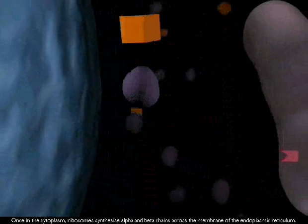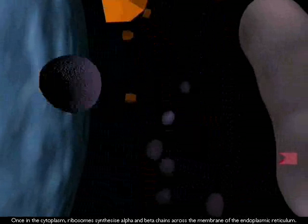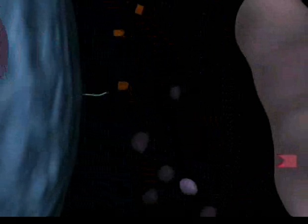Once in the cytoplasm, ribosomes synthesize alpha and beta chains across the membrane of the endoplasmic reticulum.